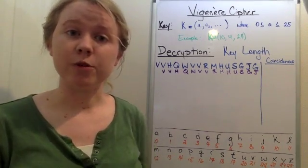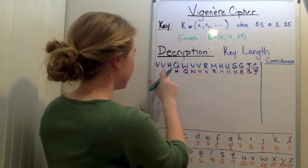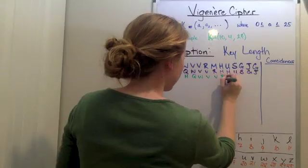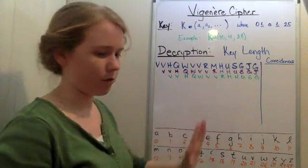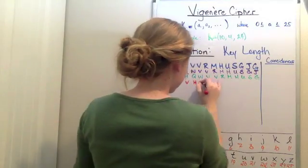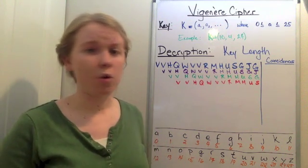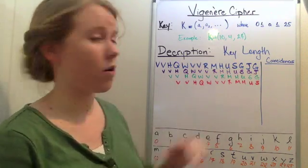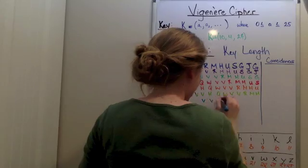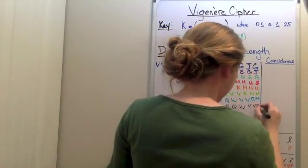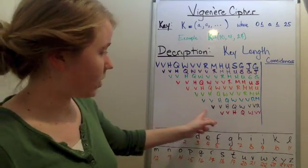What I'm going to do is I'm going to write it again, and I'm going to scoot it over one more time. So I started here before, and now I'm going to start here. So again, I just wrote the ciphertext out, only one place farther over. Now I'm going to do it again. So at this point you're probably getting the pattern. I'm going to write it quite a few times and just keep moving over each time.